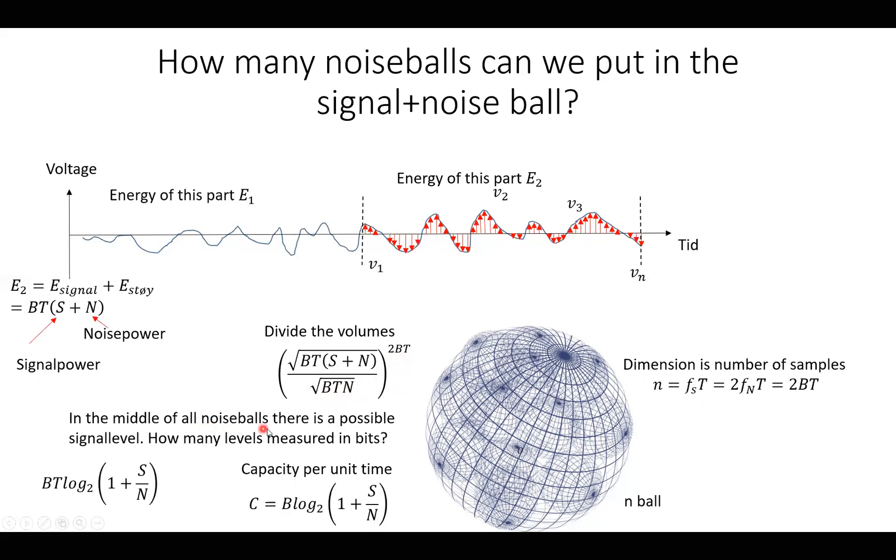In the middle of all these noise balls, there is a possible signal though. So how many levels measured in bits? Well, then we have BT log 2(1 + S/N). We have just taken the square, which gives us a half when we take the log 2 plus 2BT. So then we have BT.